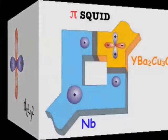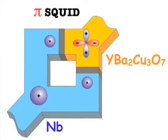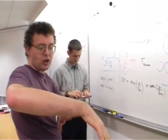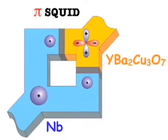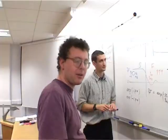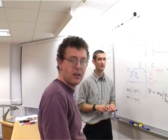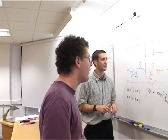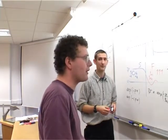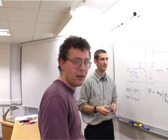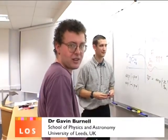Now, if you make an YBCO-Niobium ramp junction, where you have two junctions on the YBCO — one pointing along the A-axis and one along the B-axis — because YBCO is a D-wave superconductor, there's also another sign change in the wave function in the superconductor. Whereas the Niobium, because it's a BCS superconductor or an S-wave superconductor, doesn't change its sign.